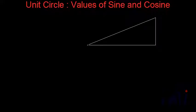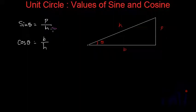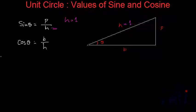In this video we are going to learn the easy way to remember the values of sine and cosine. If we have a right angle triangle where this angle is theta, then this side is called the perpendicular, this is called the base, and this is called the hypotenuse. Sine theta equals perpendicular by hypotenuse, and cosine theta equals base by hypotenuse. So if we make the hypotenuse equal to 1, then sine theta equals the length of the perpendicular and cosine theta equals the length of the base.